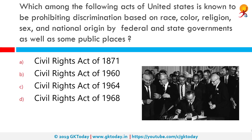Which among the following acts of the United States is known to prohibit discrimination based on race, color, religion, sex and national origin by federal and state governments as well as public places? Correct answer is the Civil Rights Act of 1964.